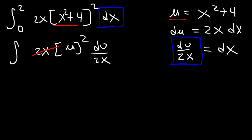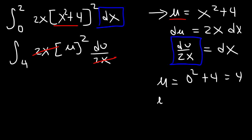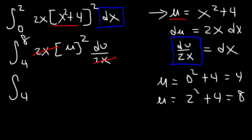As soon as you get rid of all x variables and replace with u variables, you need to adjust the lower and upper limits using this expression. When x is 0: 0 squared plus 4 is 4, so the lower limit is 4. The upper limit as an x value is 2: 2 squared plus 4 is 4 plus 4, which is 8. So now we evaluate u squared from 4 to 8.